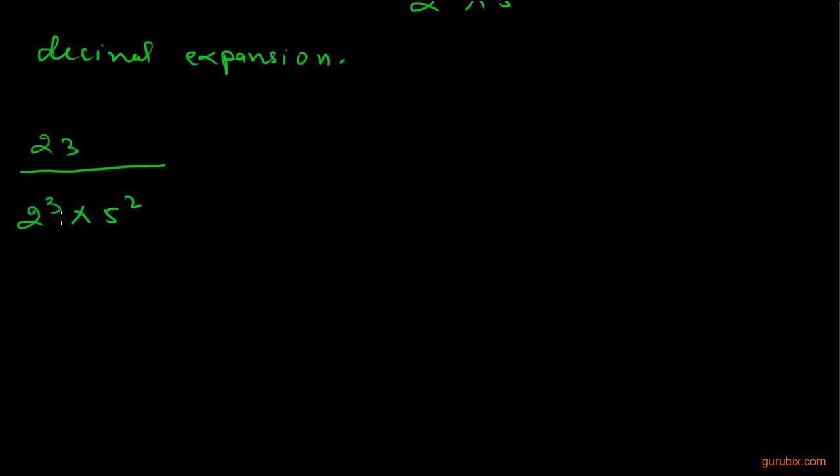Here we make the powers equal of 2 and 5, so we shall multiply both denominator and numerator by 5. Now we get 23 multiplied by 5, and here we get 2 to the power 3 multiplied by 5 to the power 3 also.